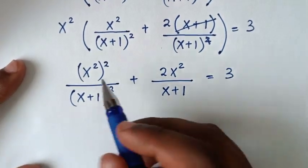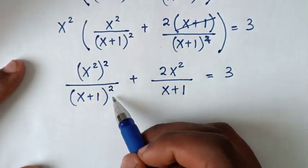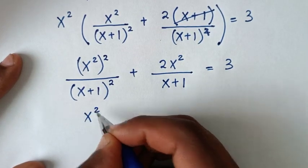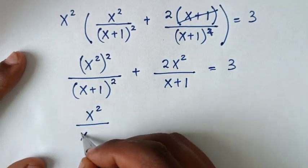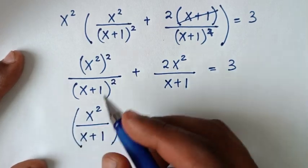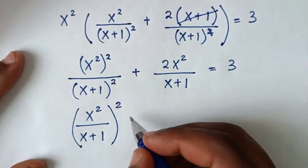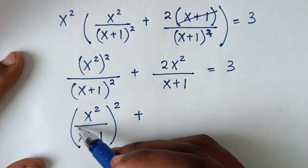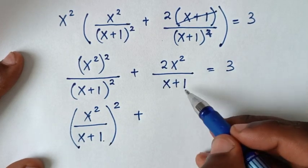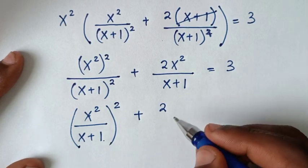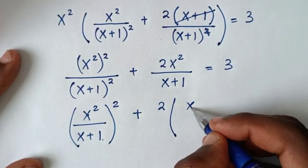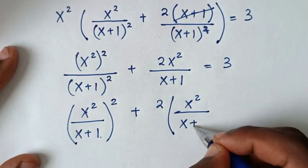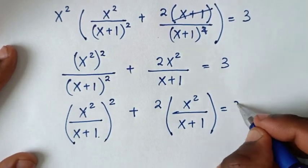The square is common, so inside the bracket we have x²/(x+1) squared, plus 2·(x²/(x+1)), equals 3.